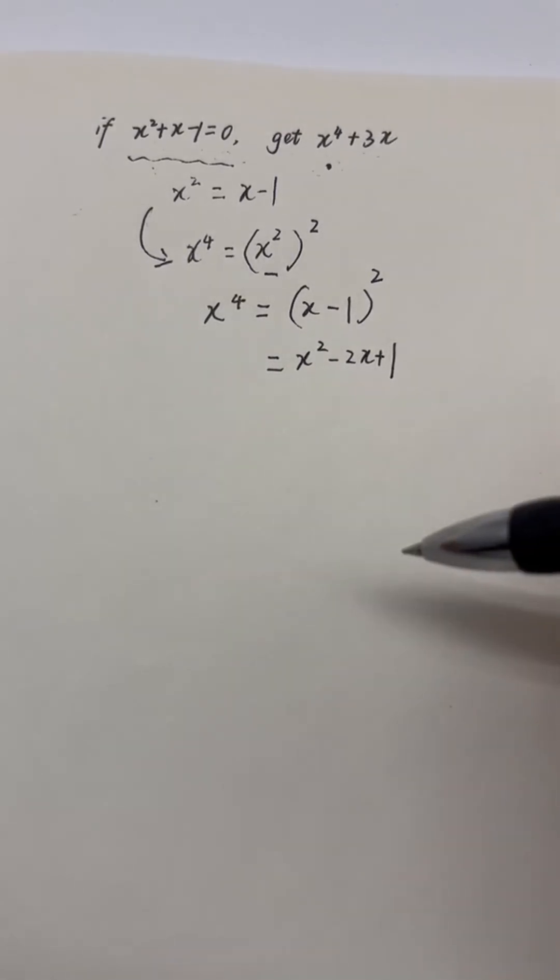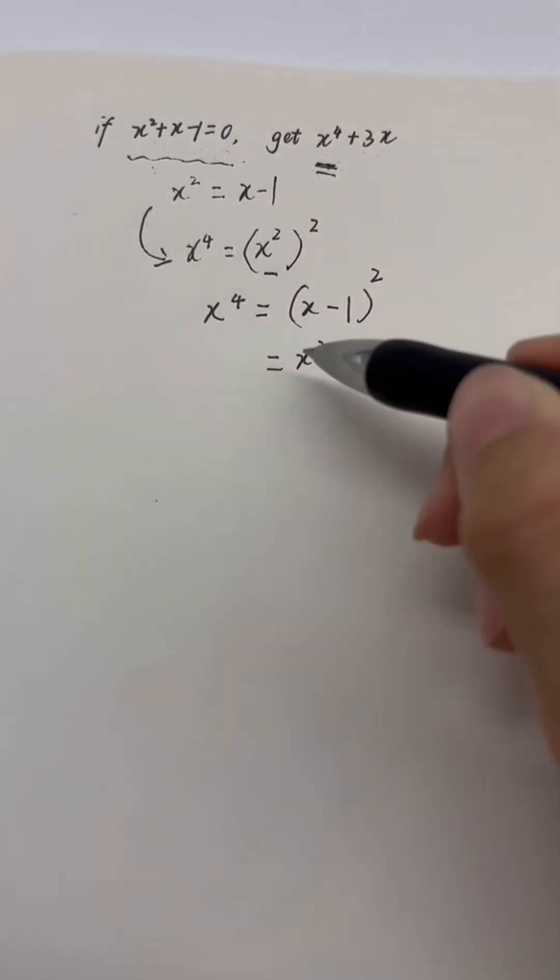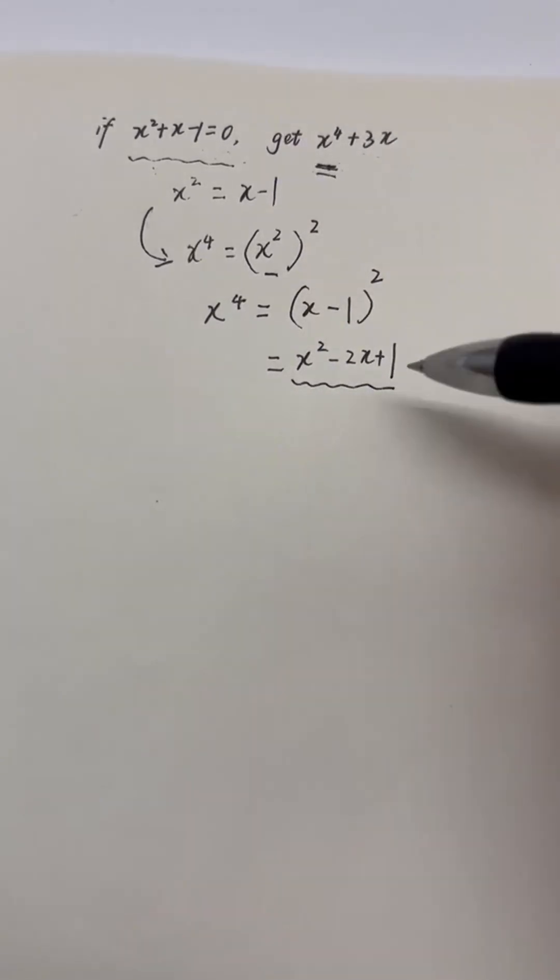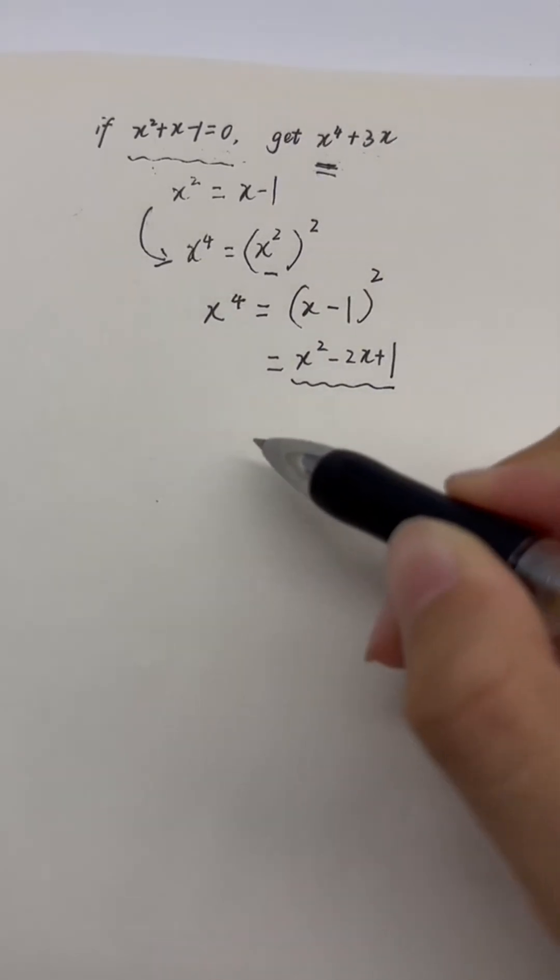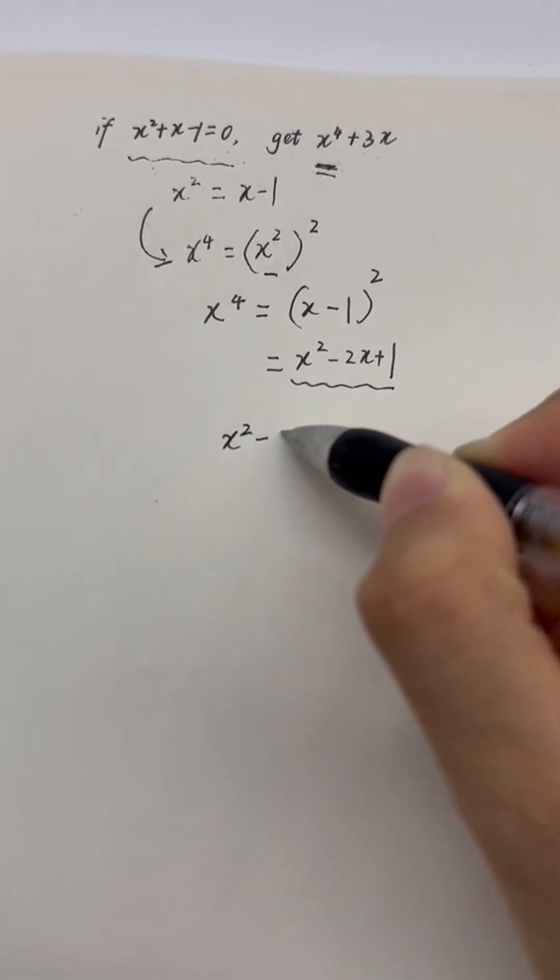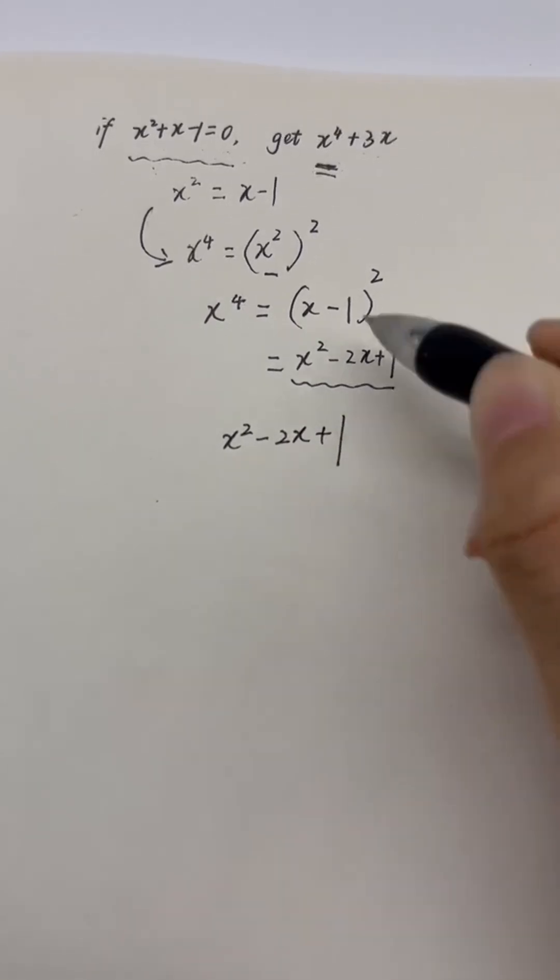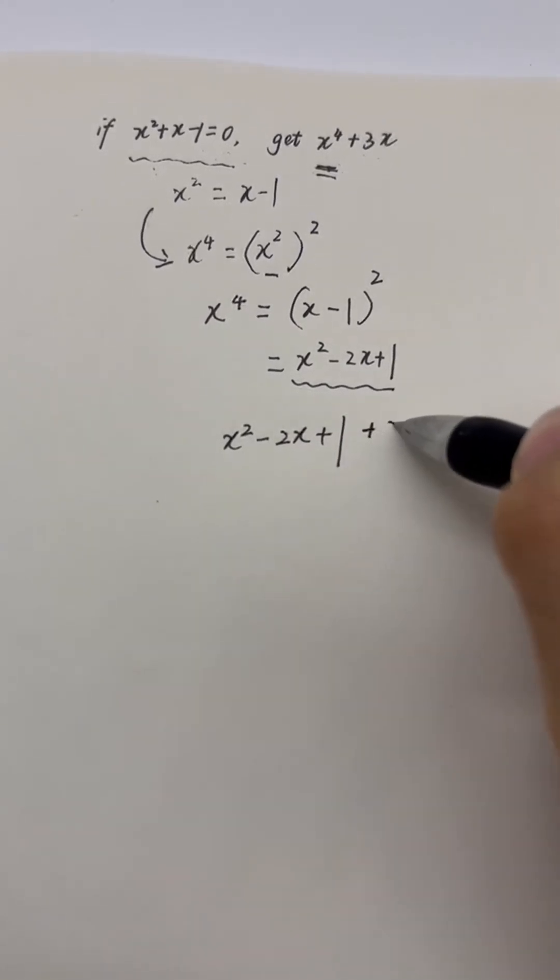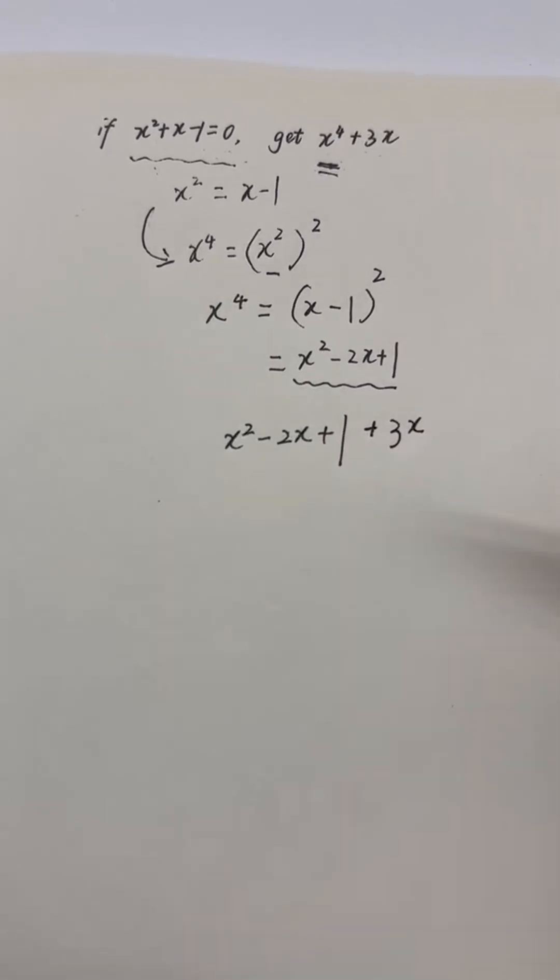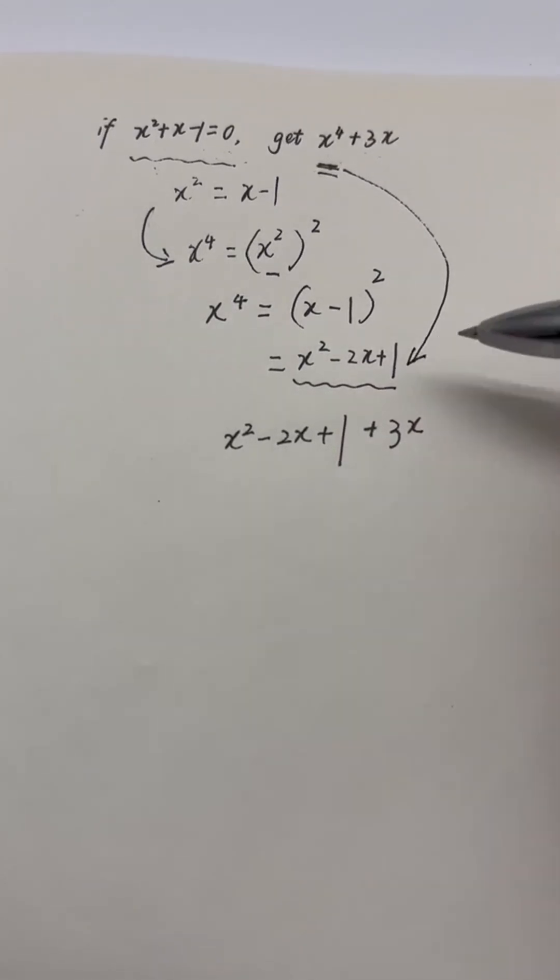Let's write here x to the power of 4 equals this, and we'll use x squared subtract 2x add 1, add 3 times x. We just change this to it.